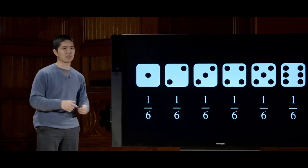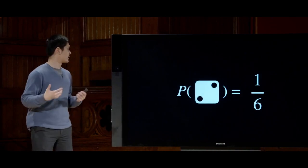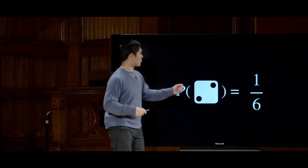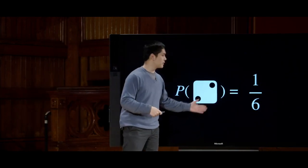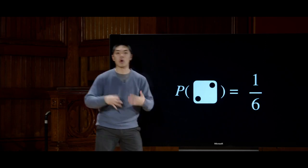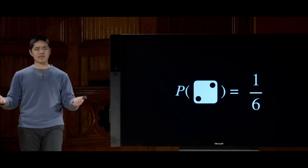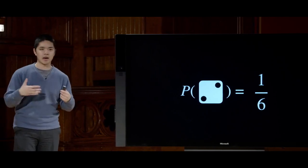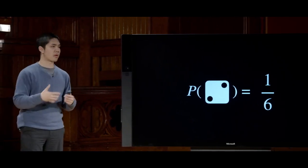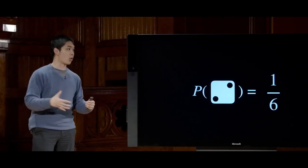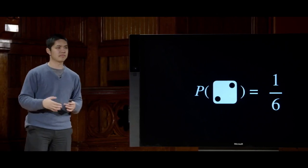We can represent any one of those probabilities like this: the probability that we roll the number 2, for example, is just 1/6. Every six times we roll the die, we'd expect that one time the die might come up as a 2. Its probability is not certain, but it's a little more than nothing.